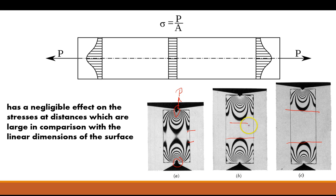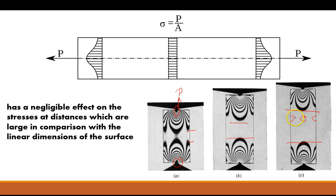An important thing to understand about Saint-Venant's Principle is that it not only impacts how something is held under axial load — meaning the further you are from the load itself, the less of an impact how the load is applied — it also speaks to concepts like stress concentrations. If there is a disruption in the geometry, such as a hole or a notch somewhere in the material, Saint-Venant's Principle still applies. The stress concentration created at that disruption will be greatest at the point of disruption but greatly diminished, almost to the point of negligible, the further away you are from it.